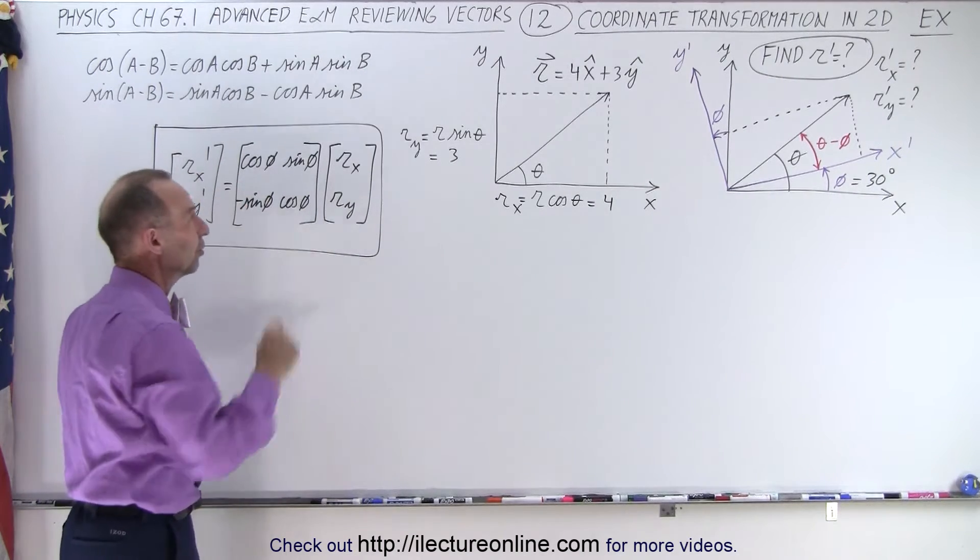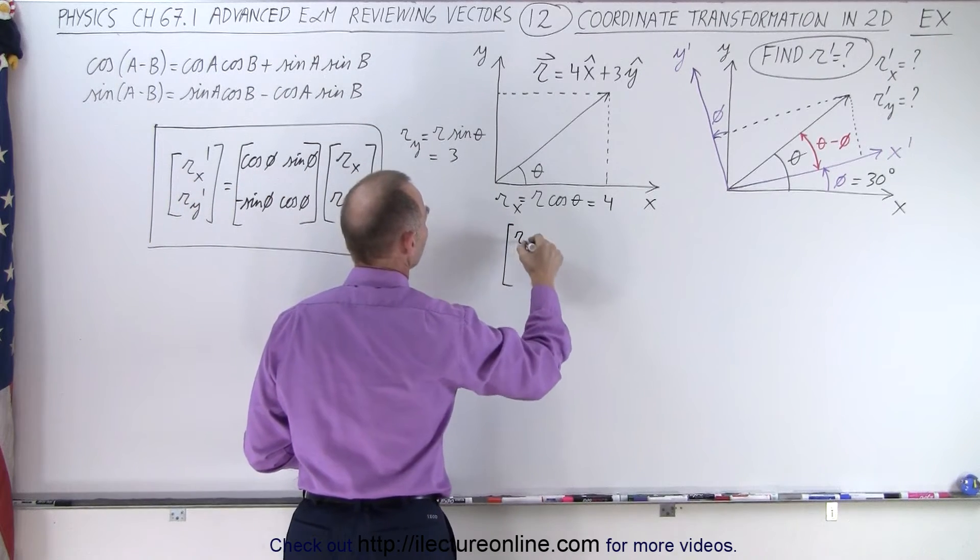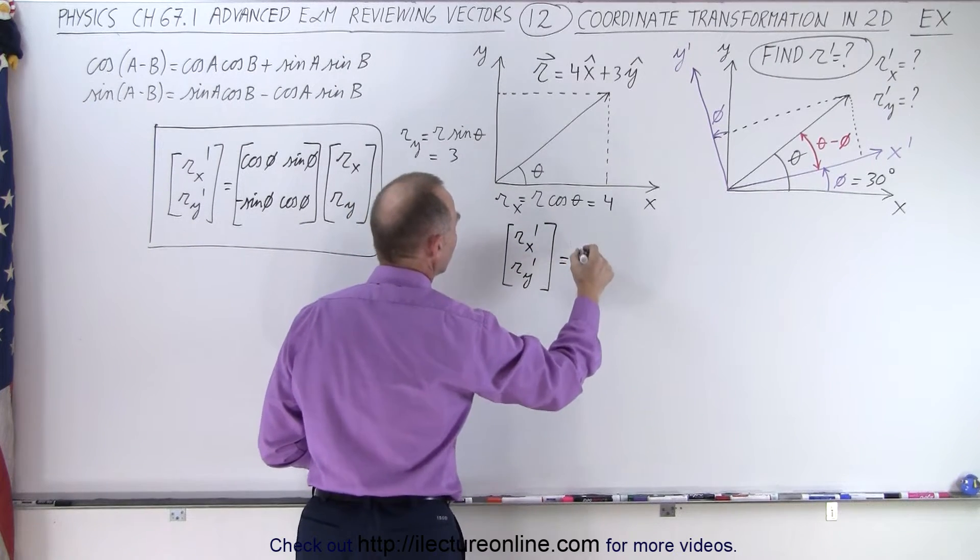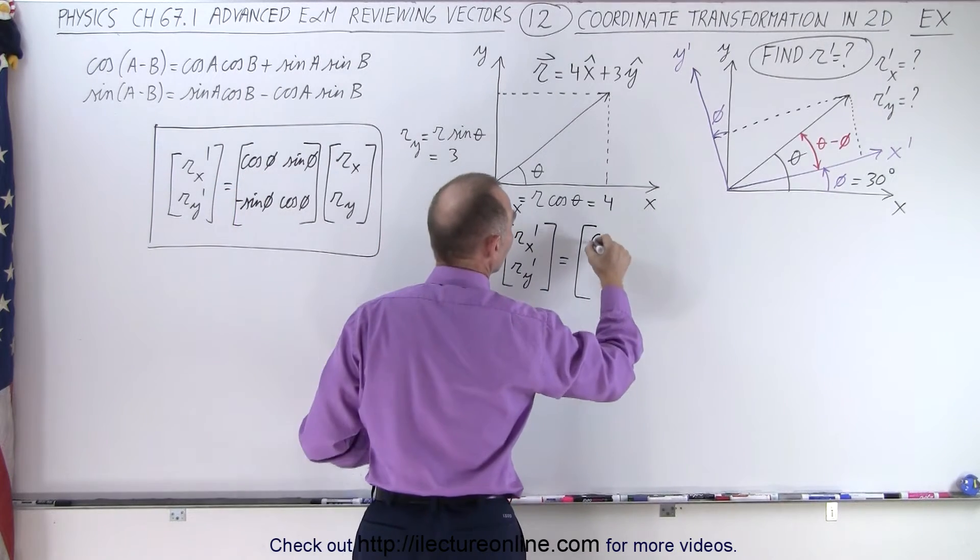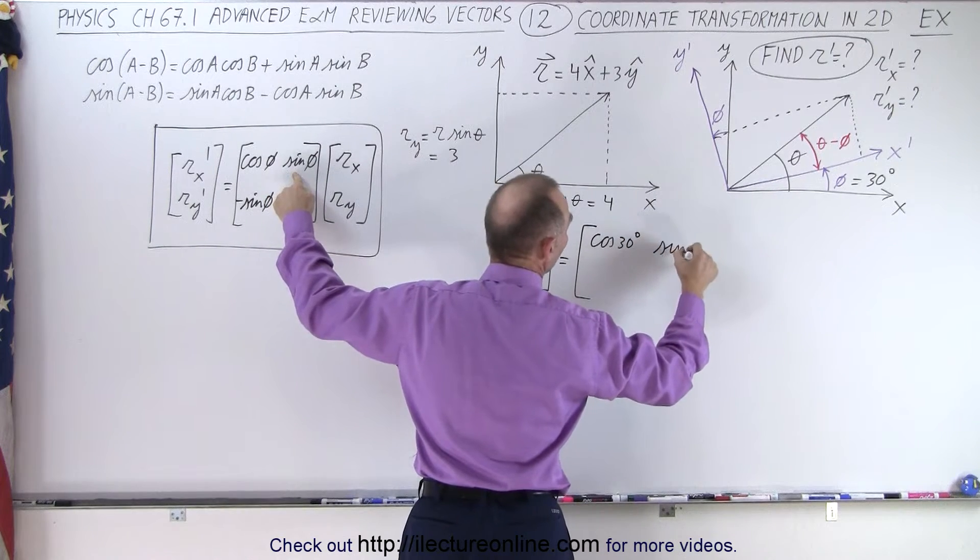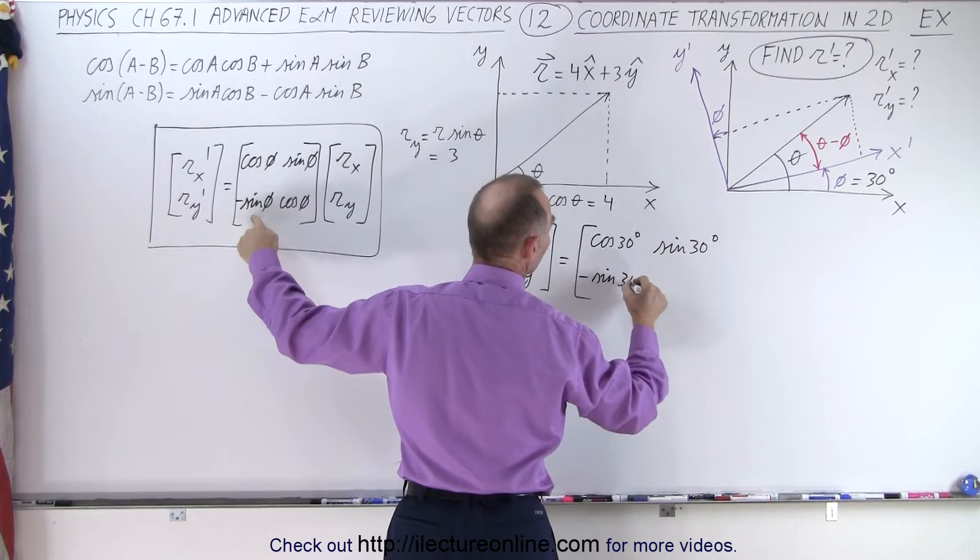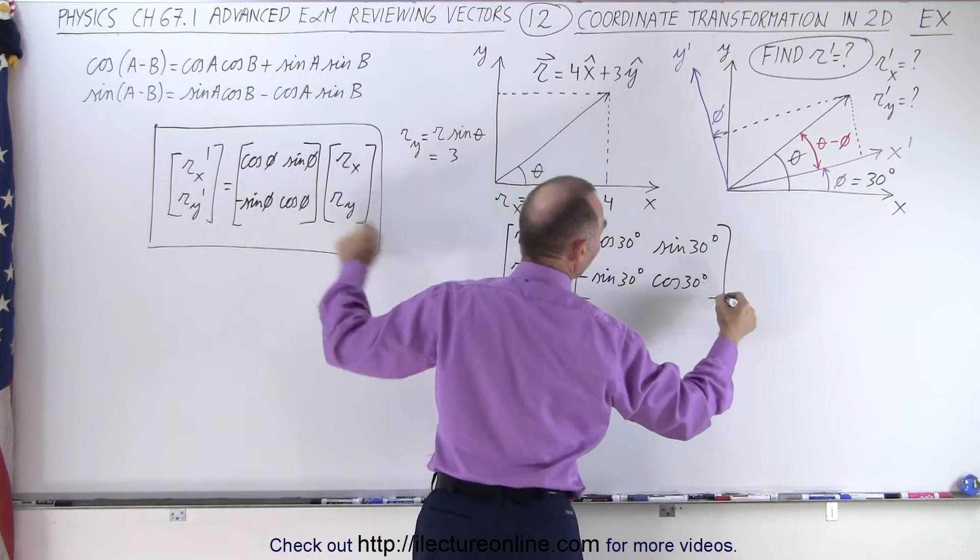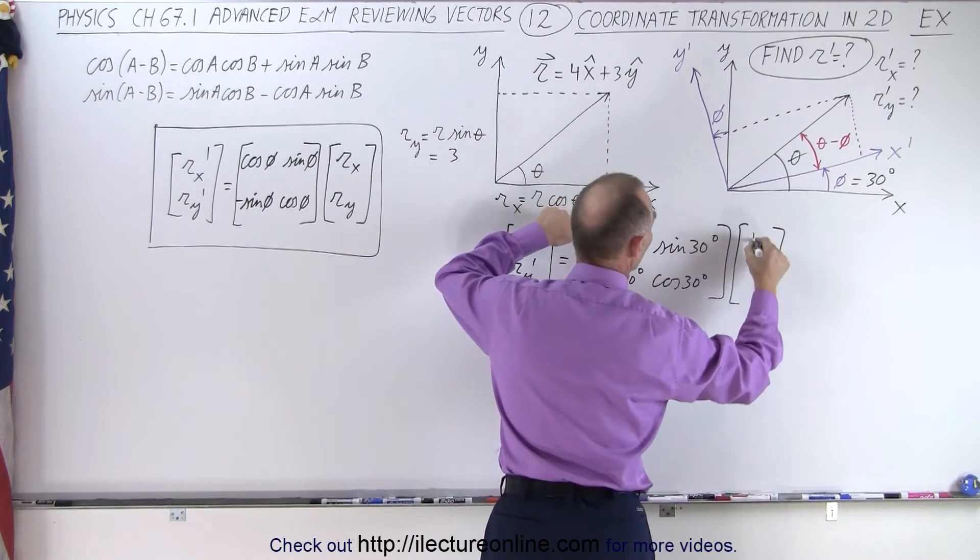In other words, we're going to find the X and Y components of our new vector. And so we can say that the R'X, R'Y components is going to be equal to the transformation. So here we have the cosine of 30 degrees, the cosine of 30 degrees and here we have the sine of 30 degrees, negative sine of 30 degrees and the cosine of 30 degrees, multiply times the components of the original vector, the X and Y components which would be 4 and 3.